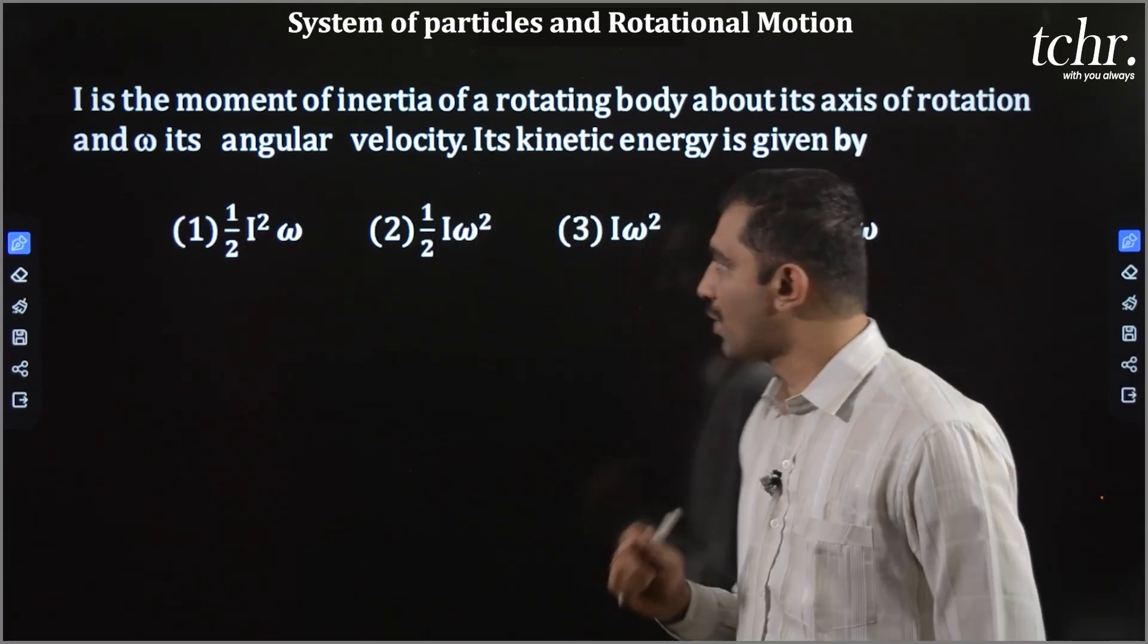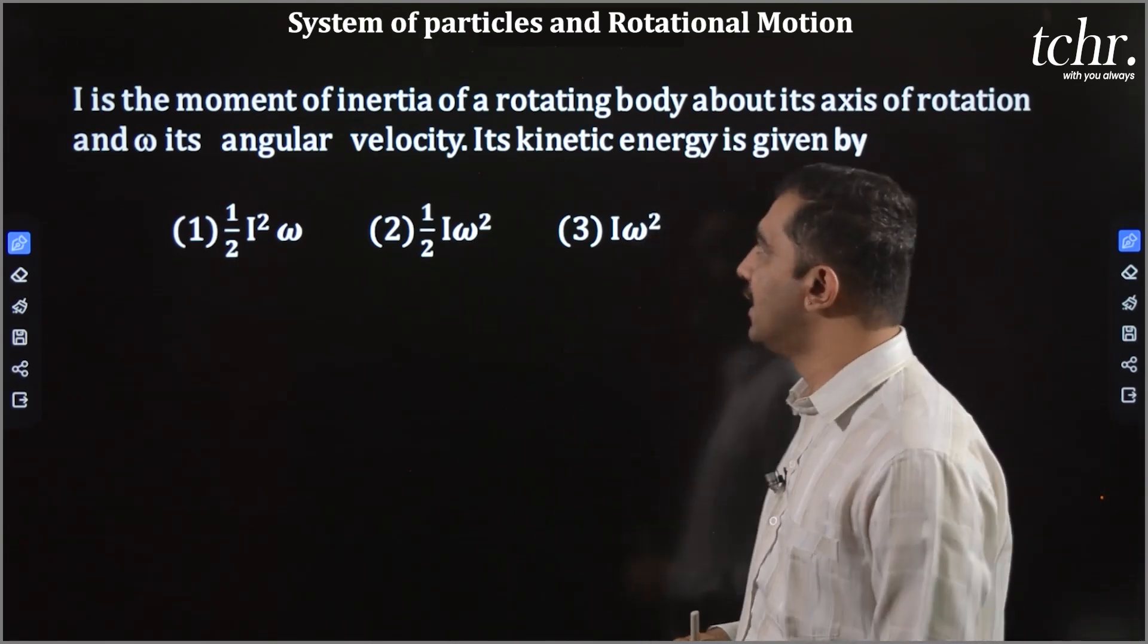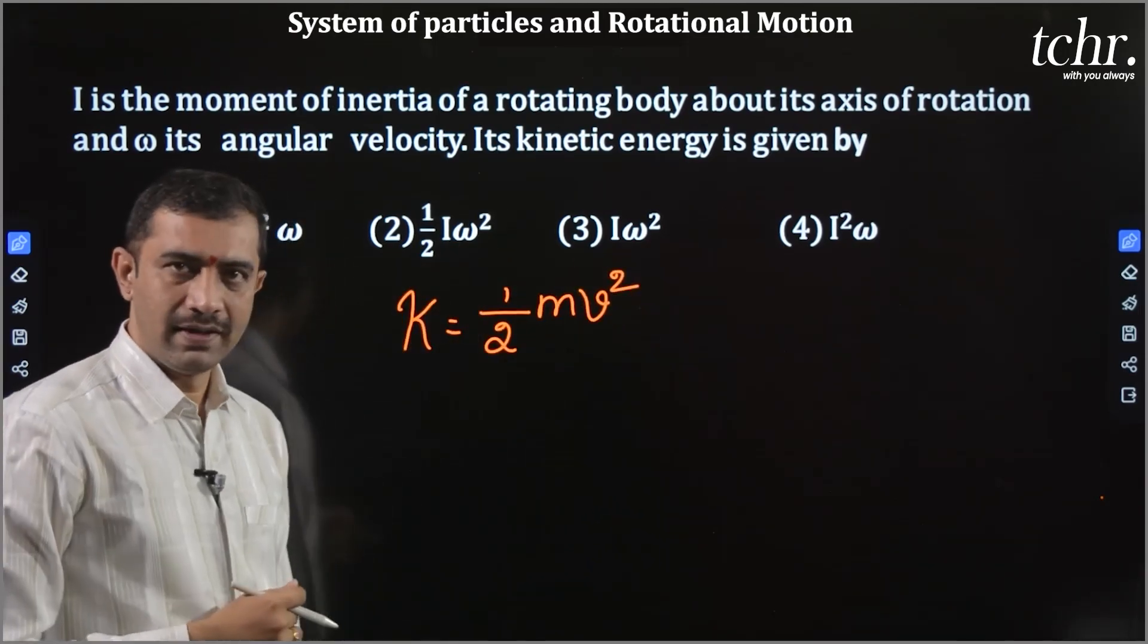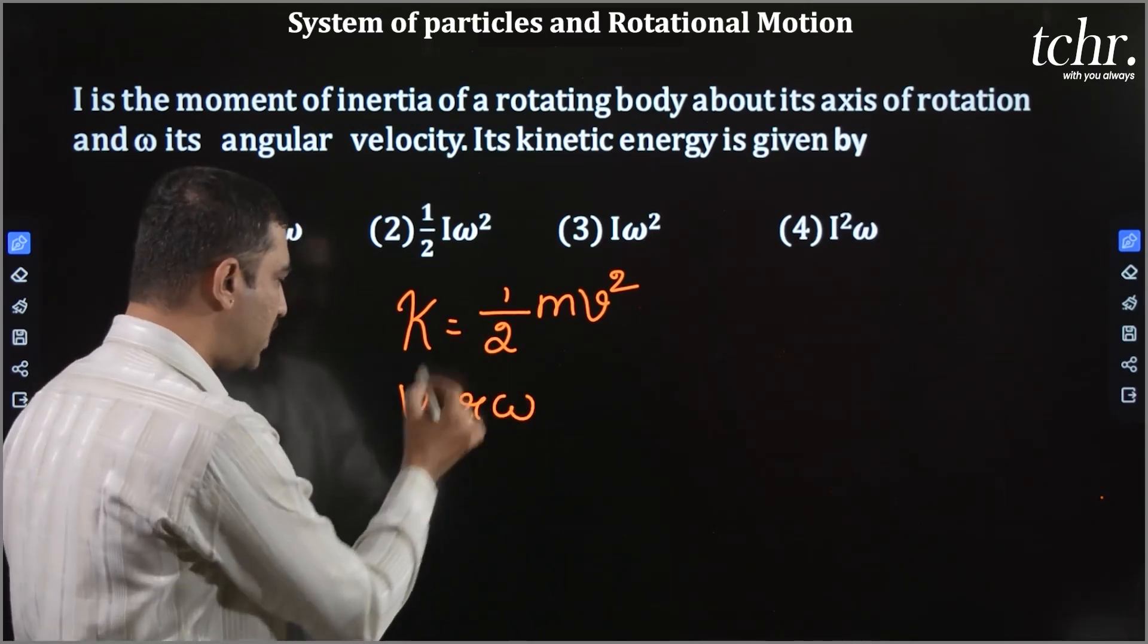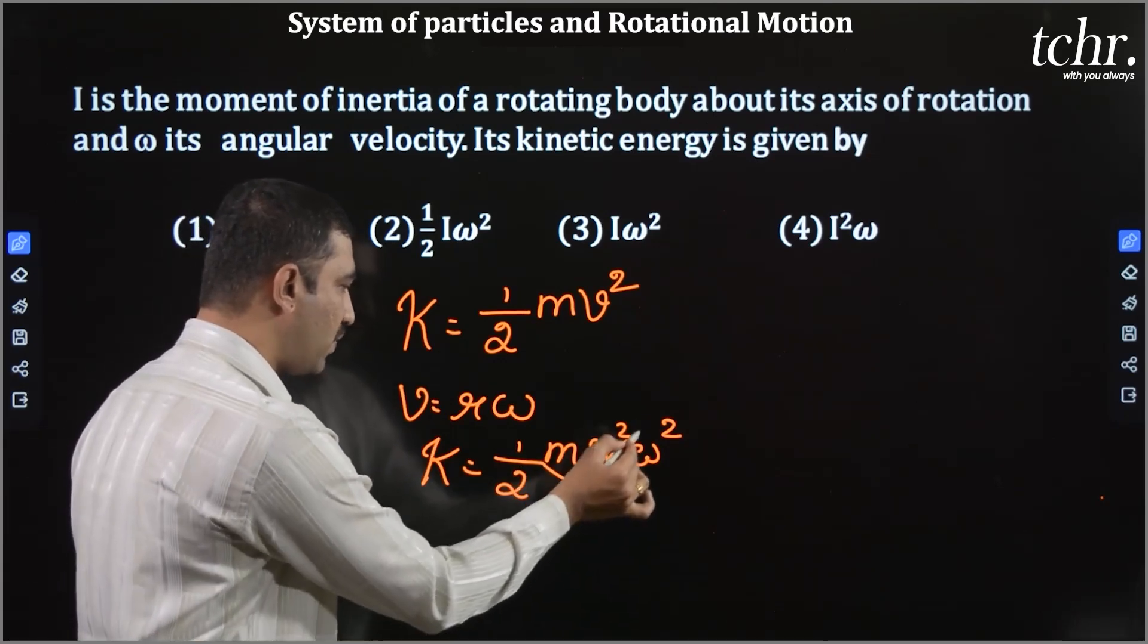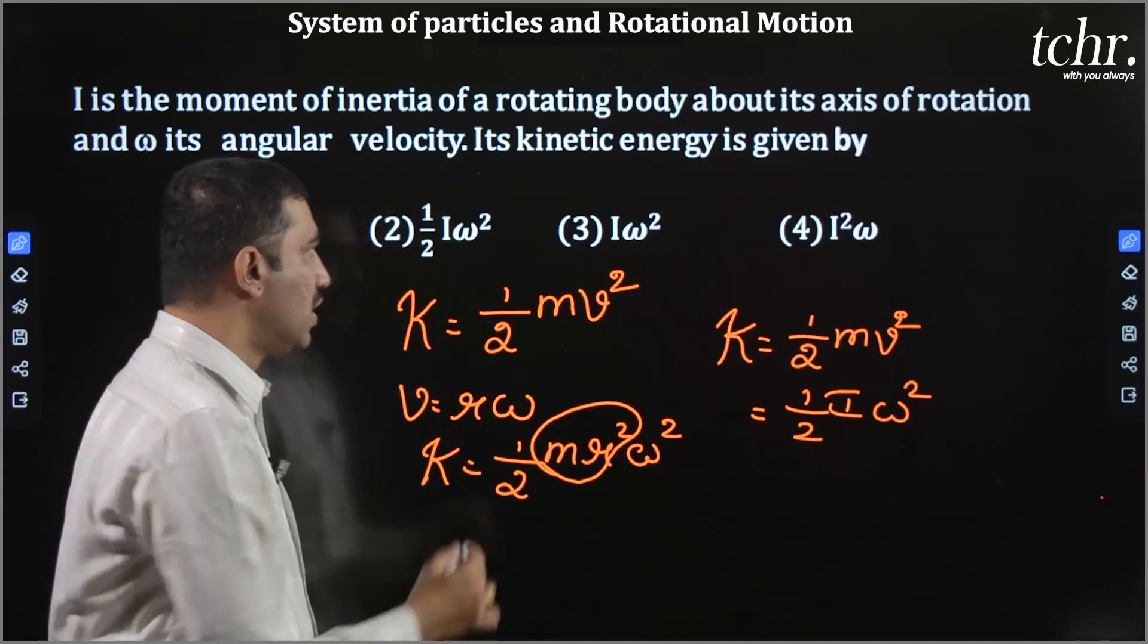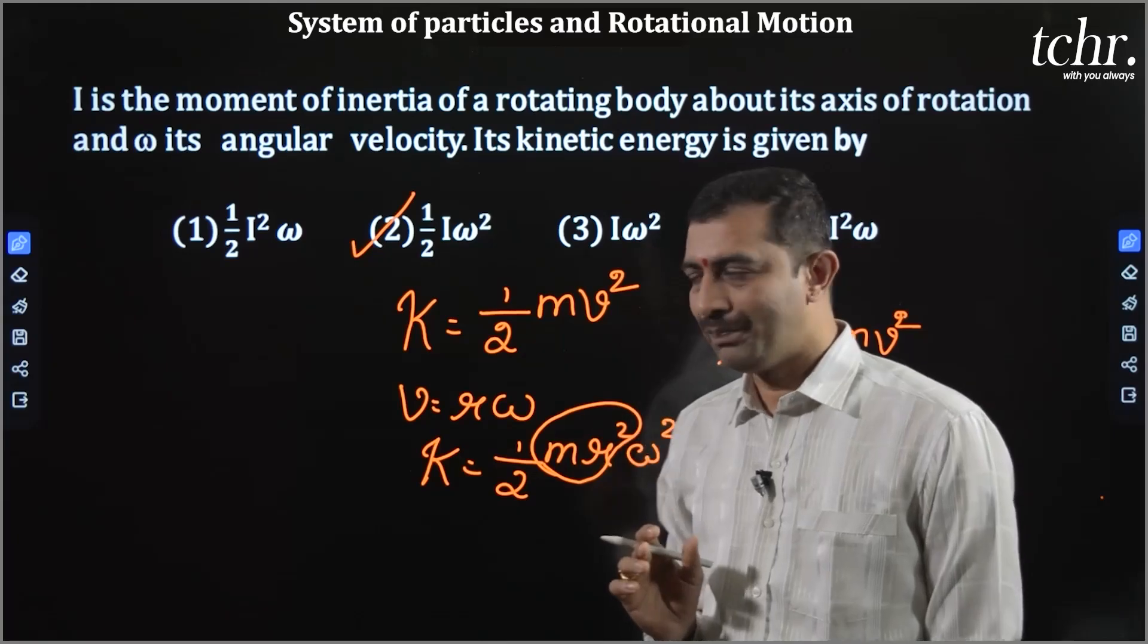Look into the first problem. I is the moment of inertia of a rotating body about its axis of rotation. Omega is the angular velocity. Kinetic energy is given by - rotational kinetic energy. Kinetic energy actually is given by half MV square. I need to include the rotational dynamics into it. We know that V equal to R into omega. So, substitute, K equal to half M into R square omega square. What is MR square? MR square is the moment of inertia. Therefore, kinetic energy will be half I omega square. So, the expression for kinetic energy of a body which is undergoing rotational motion is given by half I omega square. Basic quantity.